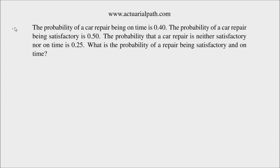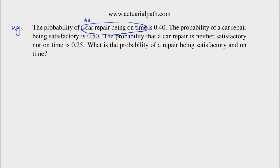Let's do an example here. This example is similar to one of the examples given as an exercise. The probability of a car repair being on time is 0.4. Let's define this event — let's call it event A. It's the event that a car repair is on time, and that event has a probability of 0.4.